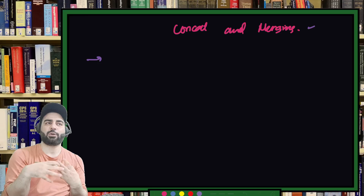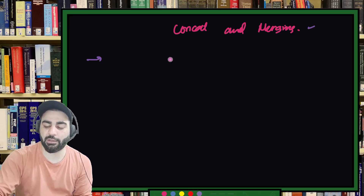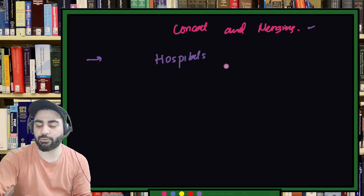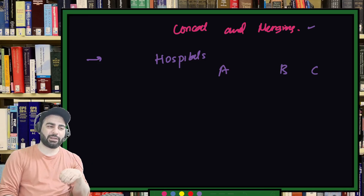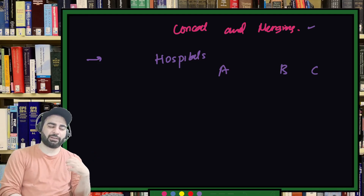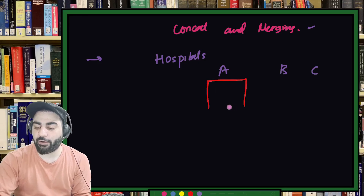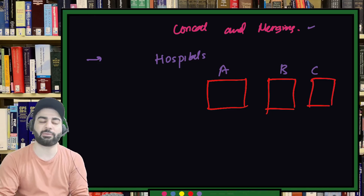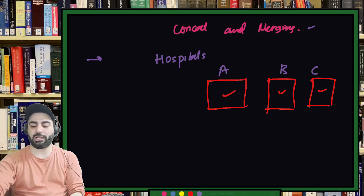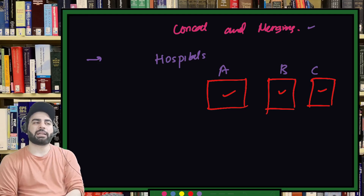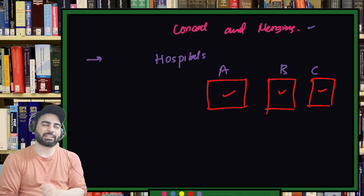Why is concatenation and merging required? Let's suppose you are running hospitals — hospital A, hospital B, and hospital C. The assumption is that the more data you give to deep learning and machine learning models, the better they train. Hospital A has some data, hospital B has some data, hospital C has some data. You want to combine them together and then train a machine learning model — so you need a way to merge, concatenate, and join these datasets.